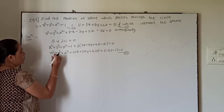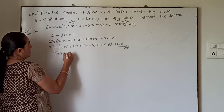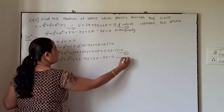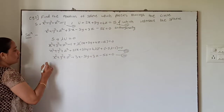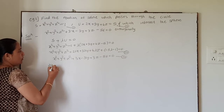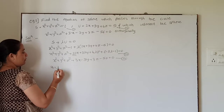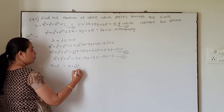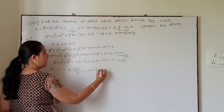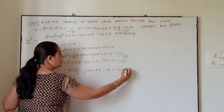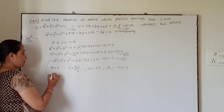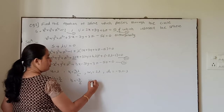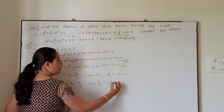The given intersecting sphere is x² + y² + z² + 3x − 3y + 3z − 56 = 0. Comparing both equations with the general form, for the required sphere: u₁ = λ, v₁ = 3λ/2, w₁ = 2λ, d₁ = −5λ − 1. For the given sphere: u₂ = 3/2, v₂ = −3/2, w₂ = 3/2, d₂ = −56.